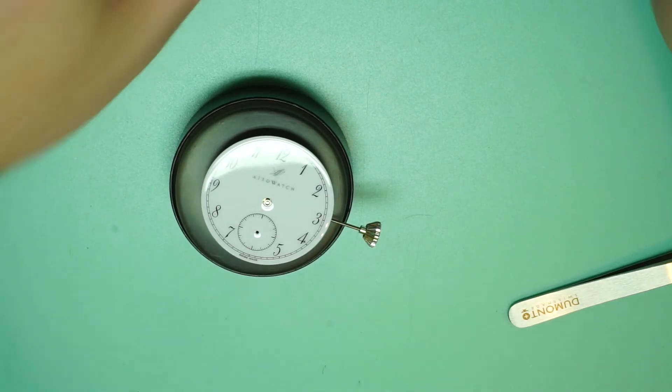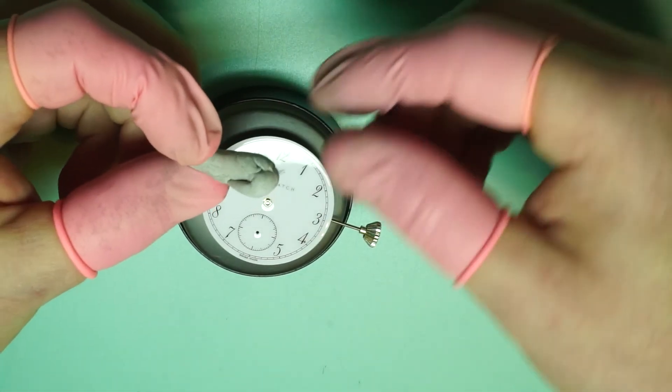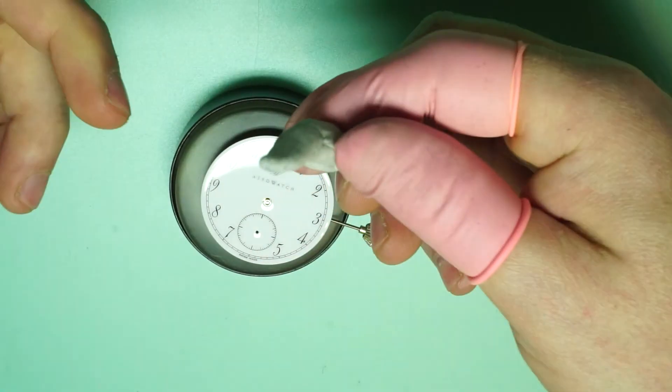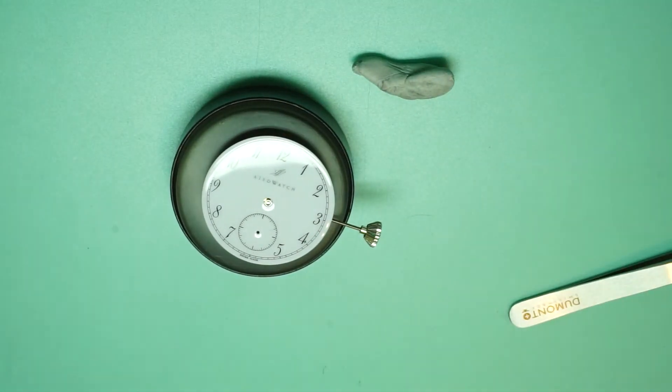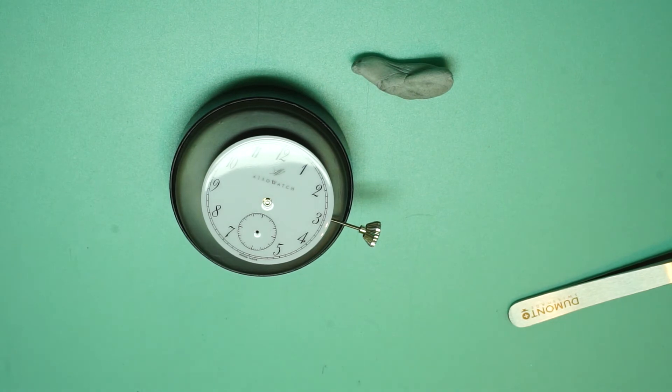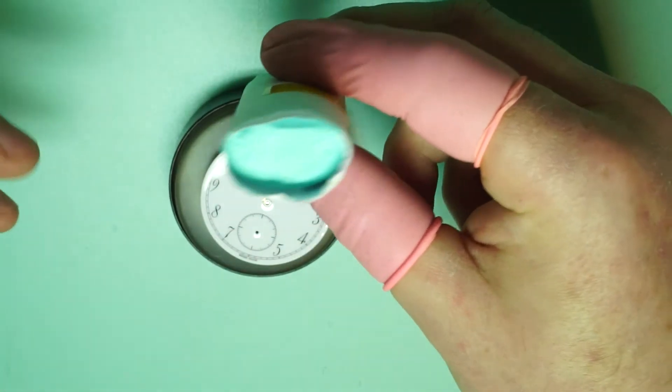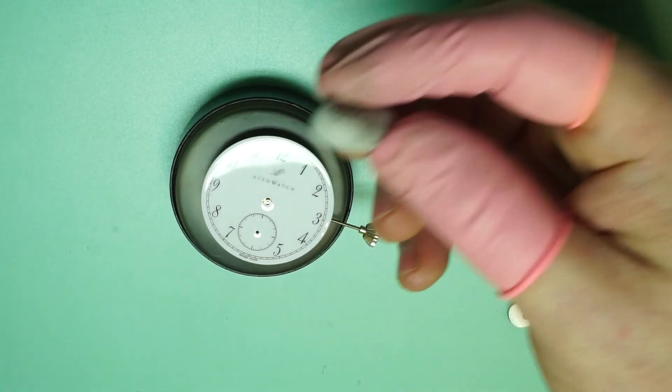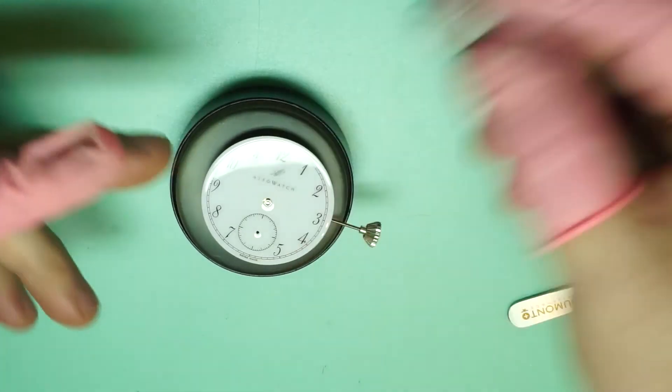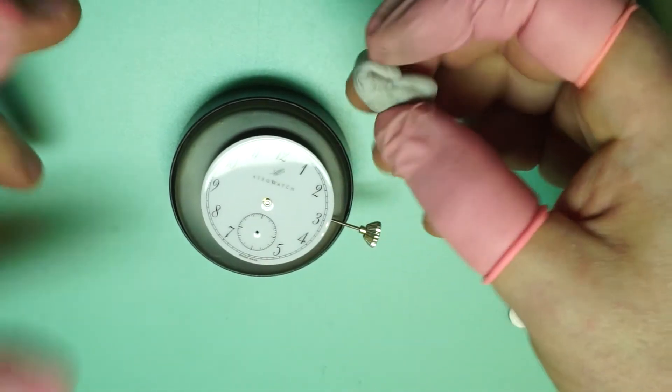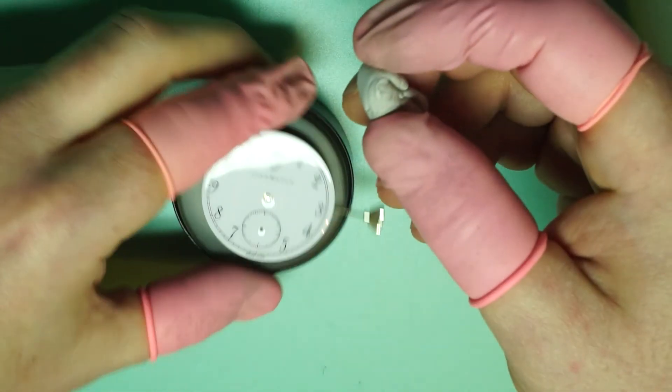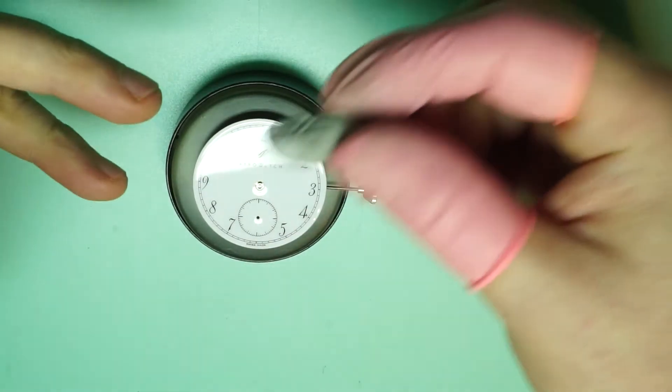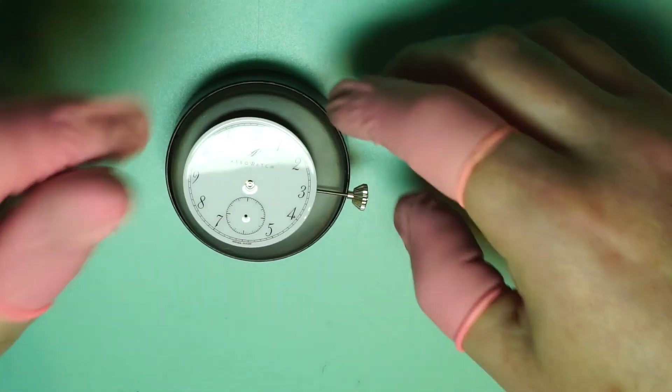So we're using a little bit of Rodico there. If you're wondering what this is, this is Rodico, which is a watchmaking cleaning clay. Most of you will probably recognize it as being a green clay like this. And it comes in tubes like this, a bit like plasticine or Fimo. And it's got many purposes. You can use it to pick up things, you can use it to hold things. It's good for cleaning and all sorts. So if you're getting into watch repair as a hobby, then you definitely want to get some of this. It's excellent stuff and it can be used for many purposes.